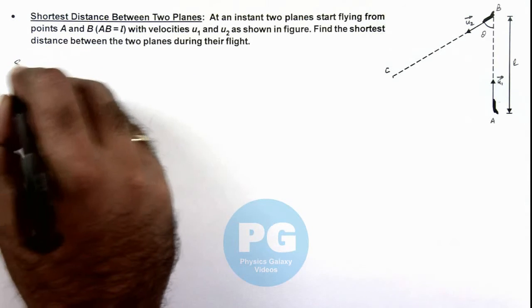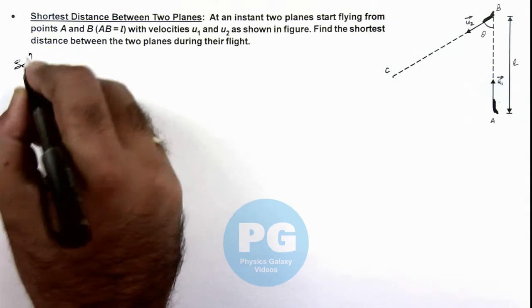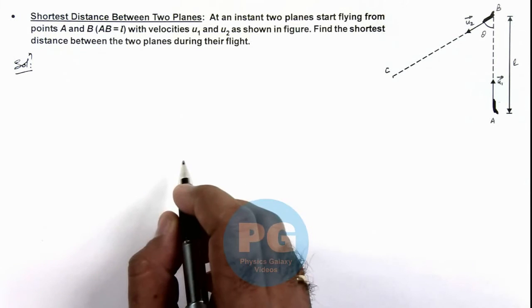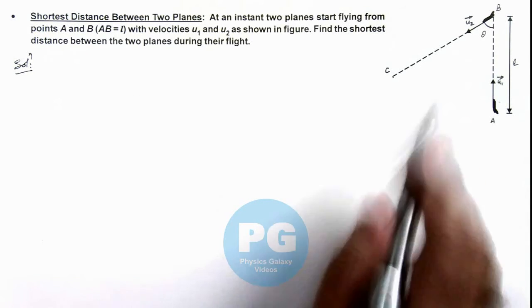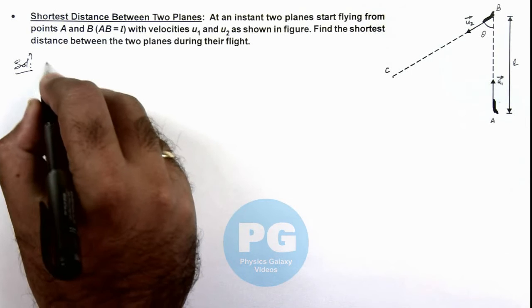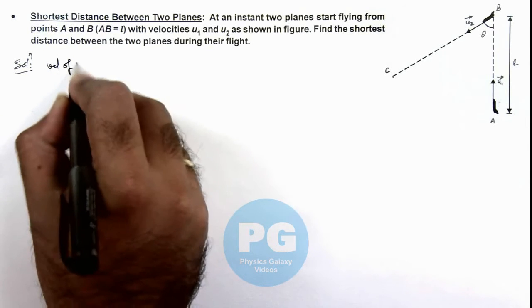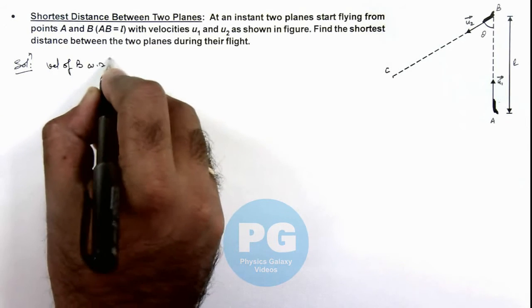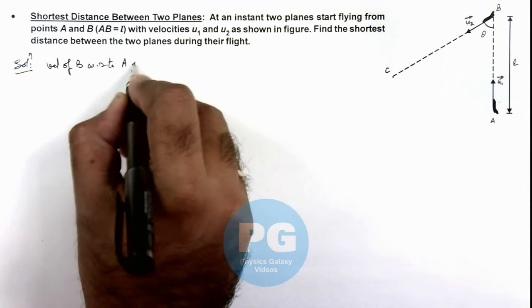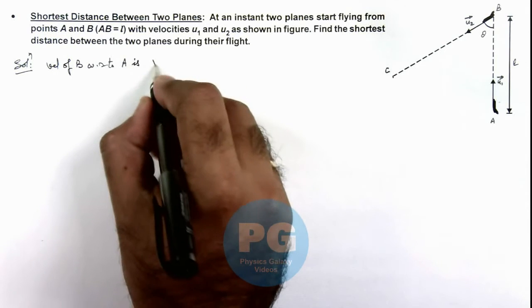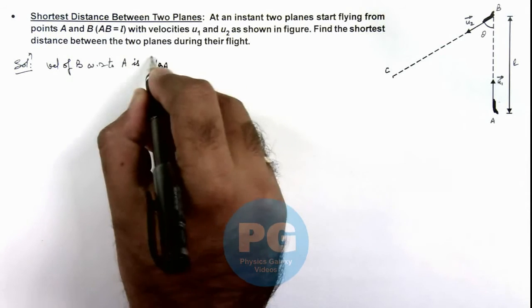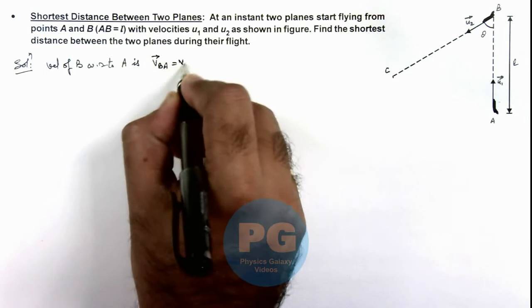Here, we can calculate the shortest distance by using the relative velocity of one plane with respect to the other. So here if we calculate the velocity of B with respect to A, this we can write as V_BA, and that can be written as V_B minus V_A.